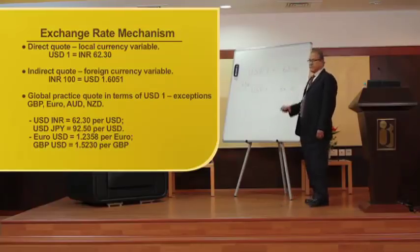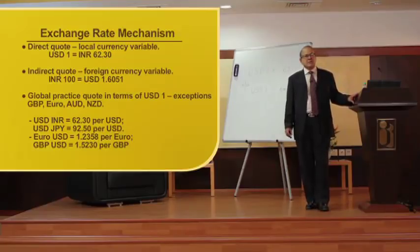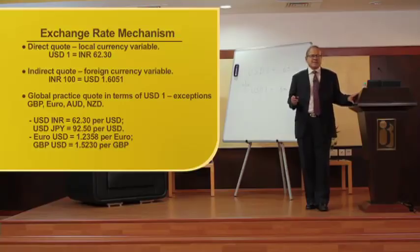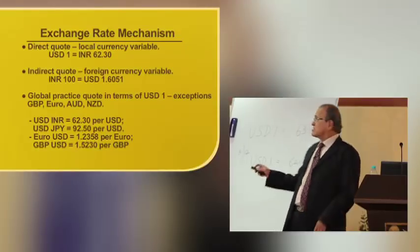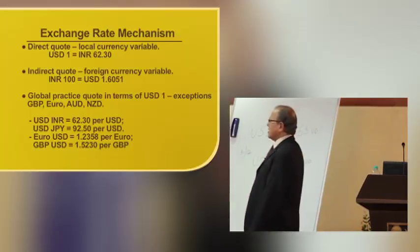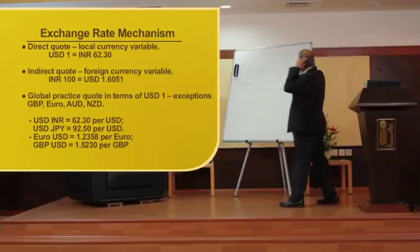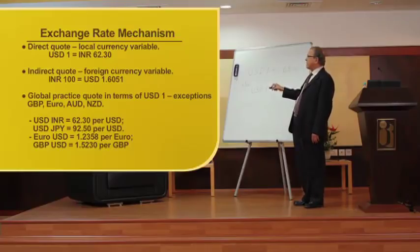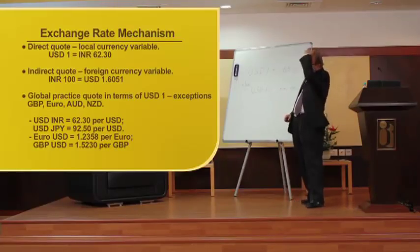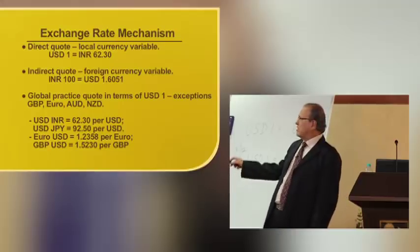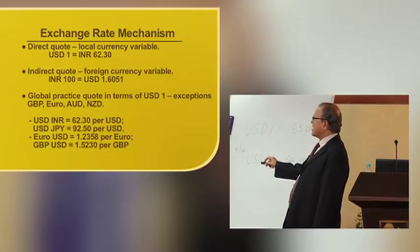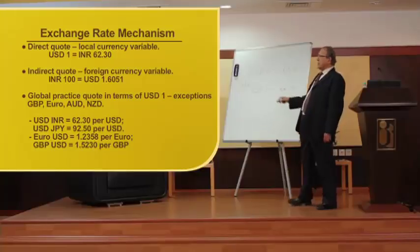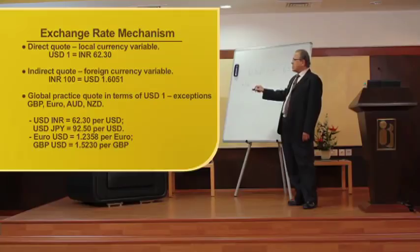There are different methods of quoting. A quote means you are announcing the deal price. The first is called a direct quote, where the local currency is the variable. For example, USD 1 equals INR 62.30 — that is a typical direct quote. An indirect quote is where the foreign currency is the variable and the Indian currency is fixed. When USD becomes the variable, the quote is called an indirect quote; where local currency is variable, it's a direct quote.